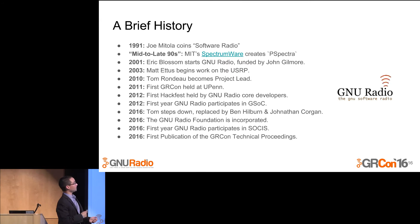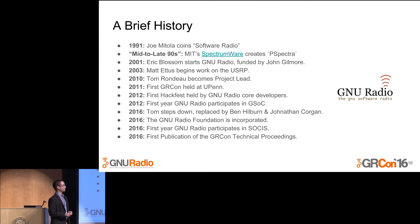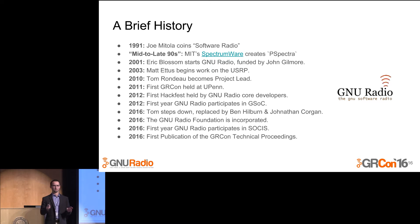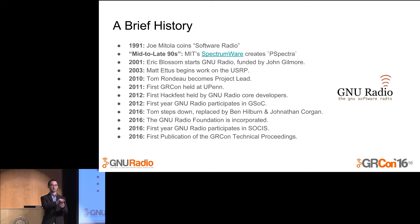A brief history. In 1991, Joe Mottola coined the term software radio. In the mid to late 90s, a program at MIT called Spectrumware created P-Spectra. In 1998, there was a commercial spin-off using the P-Spectra code. In 2001, there was an open source spin-off using the P-Spectra code, which was called GNU Radio — with a complete rewrite shortly after that removed the P-Spectra code. In 2003, Matt Ettus began work on the USRP — the first hardware specifically designed to be used with GNU Radio. The original USRP PCB boards actually said GNU Radio on them.